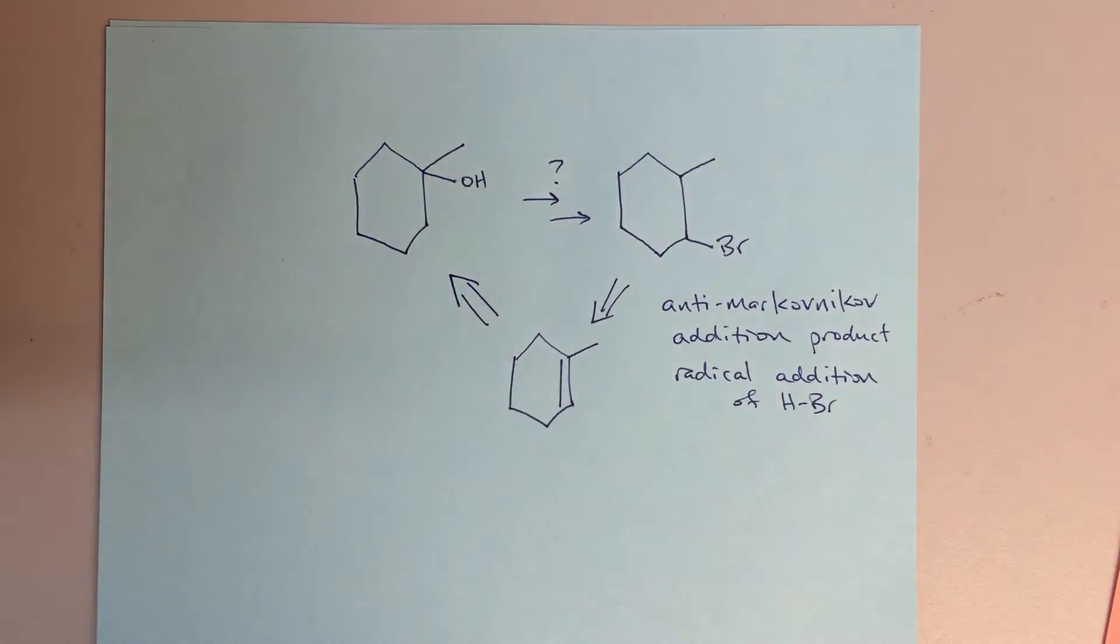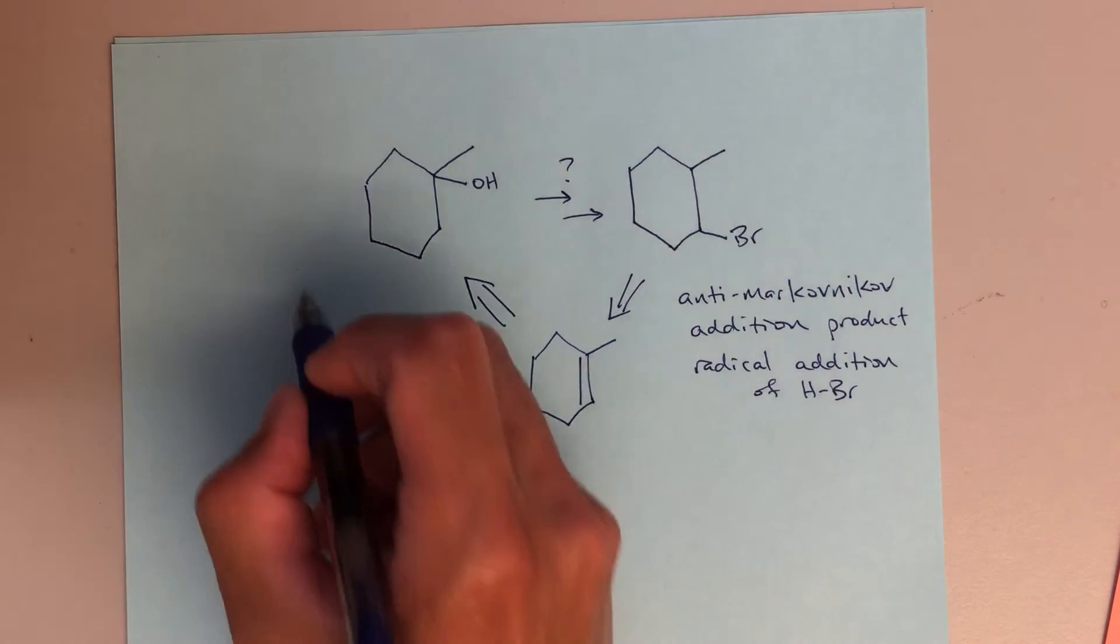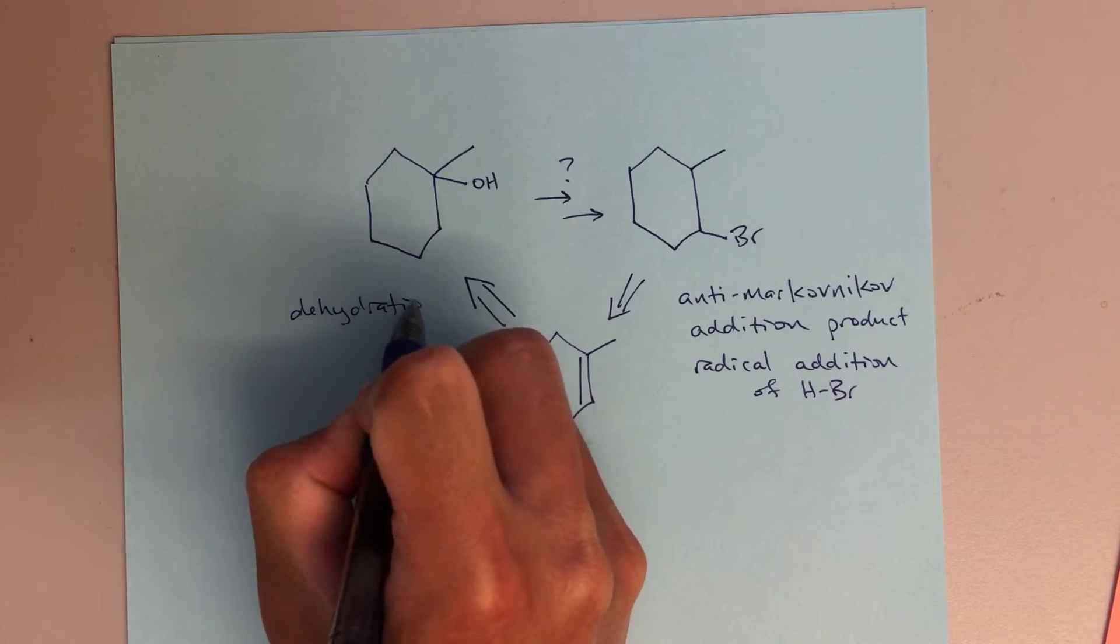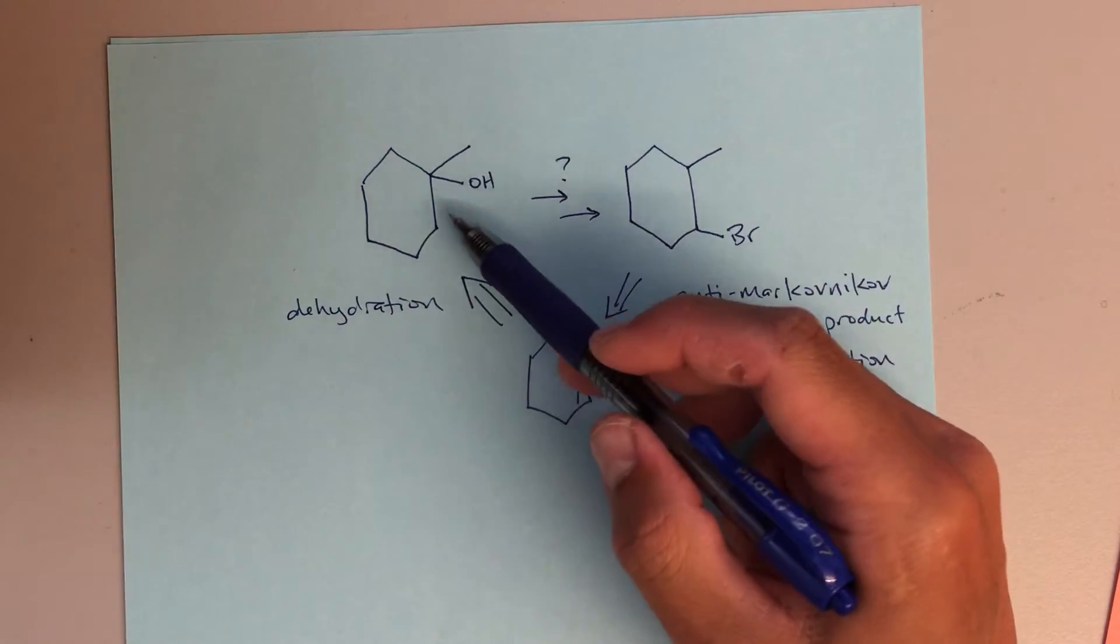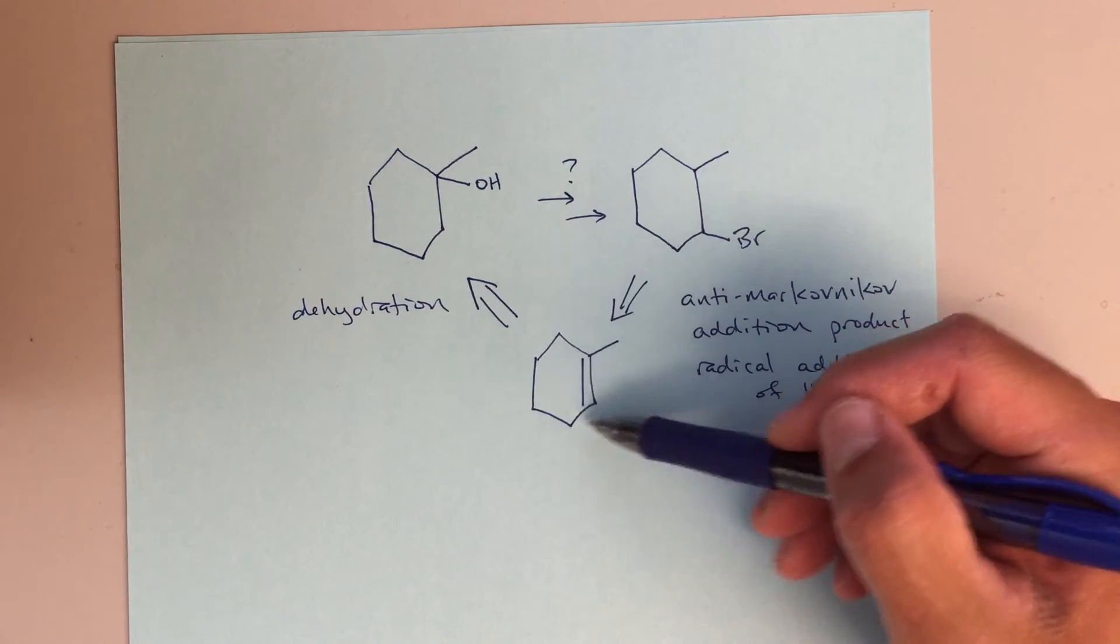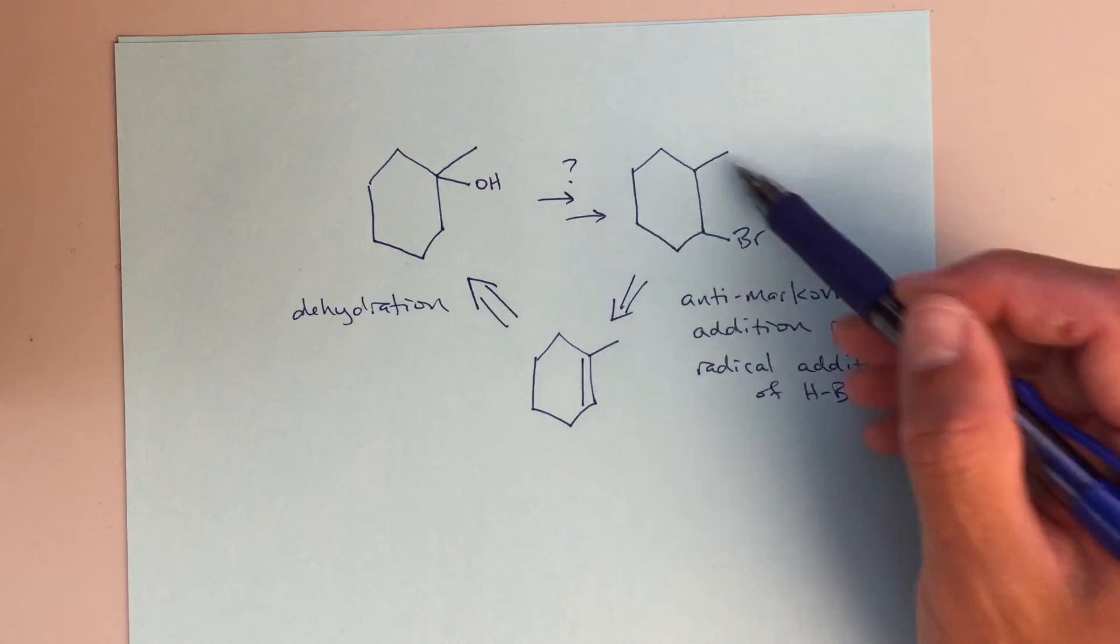So again, we've talked about making alkenes in class today and probably previously, and this is just a simple dehydration reaction. I know that if I start with this alcohol, I can do a dehydration, eliminate water. That will lead me to this alkene. From this alkene, I can then do an anti-Markovnikov addition to end up with my final product.